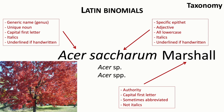You also might see SP or SPP, not in italics, written after the genus. With one P, this means a particular species that is not identified or known. With two Ps, this means a group of species within the genus.